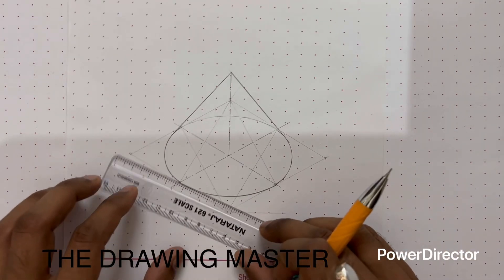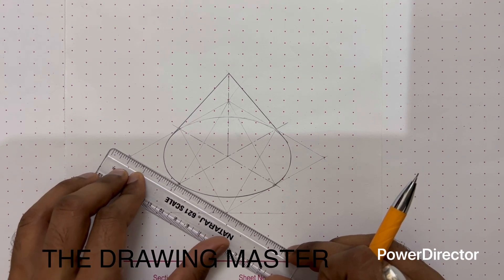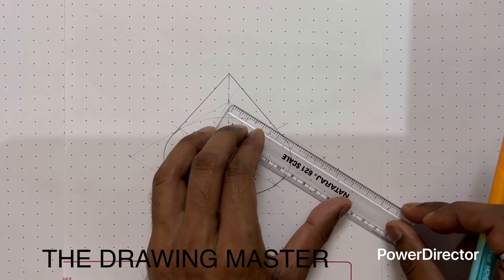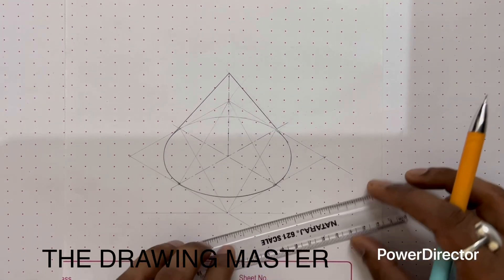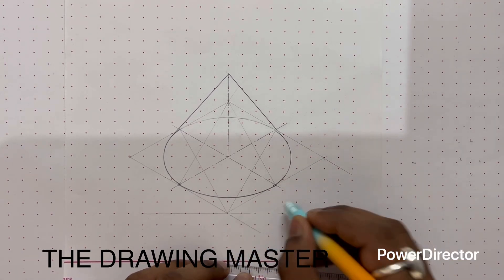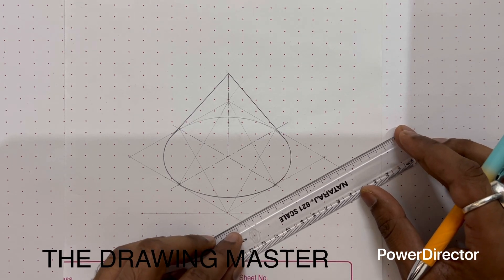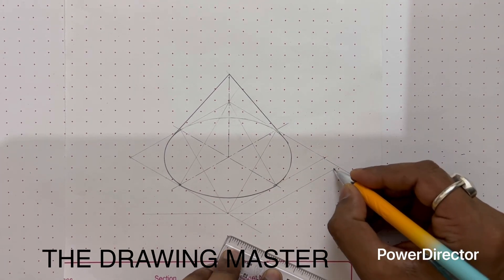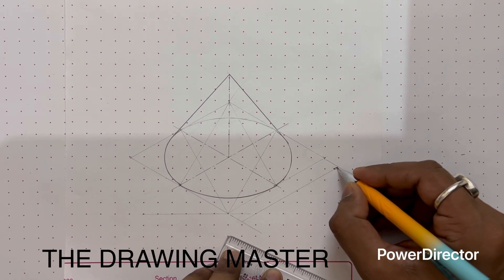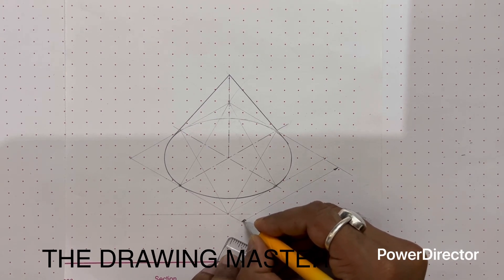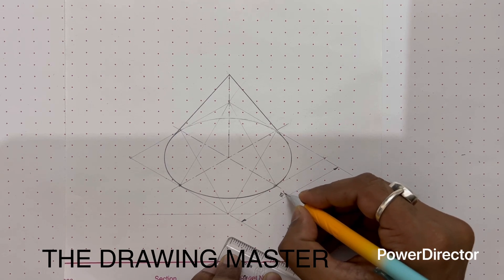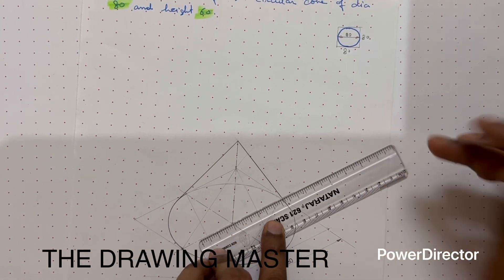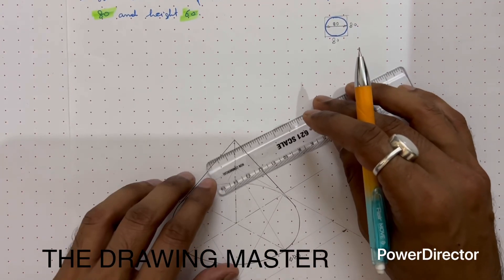Let's see the dimensioning of this object. For dimensioning, 30-degree extension line should be there. Align your scale with the edge, base edge. Extend this line. Now the scale is parallel to the base edge. You can see this line of the arrowhead is parallel to this extension line, that is 30 degrees. This is diameter 80.